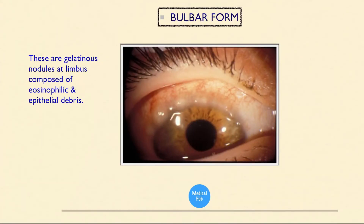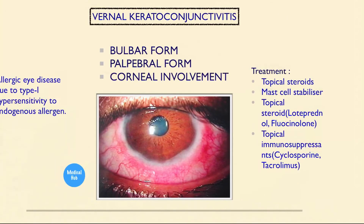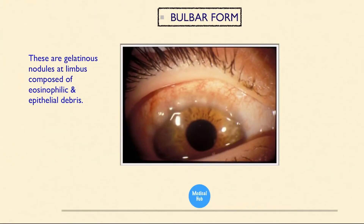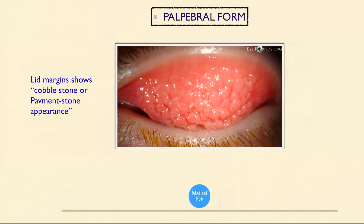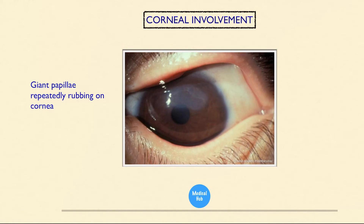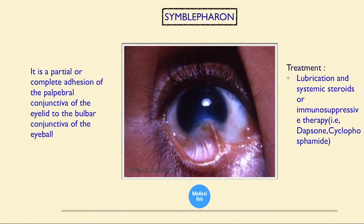Treatment for vernal keratoconjunctivitis: topical steroids, mast cell stabilizers, topical steroids like loteprednol and fluorometholone, topical immunosuppressants like cyclosporine and tacrolimus. The bulbar form shows gelatinous nodules at the limbus composed of eosinophilic and epithelial debris. The palpebral form shows cobblestone or pavement stone appearance.